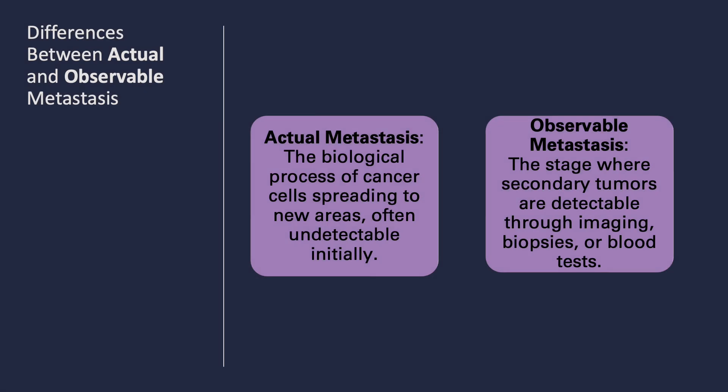All patients should understand the differences between actual and observable metastasis. Actual metastasis refers to the biological process of cancer cells spreading to new areas, often occurring well before detection is possible. On the other hand, observable metastasis is when these secondary tumors become detectable through imaging, biopsies, or blood tests. This distinction is important because it influences how early we can intervene and how we plan treatment strategies.